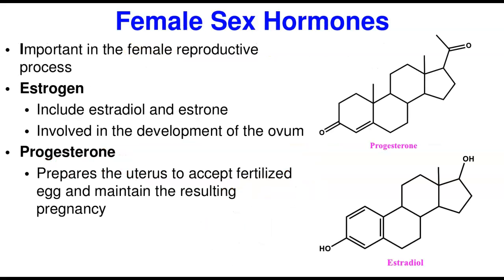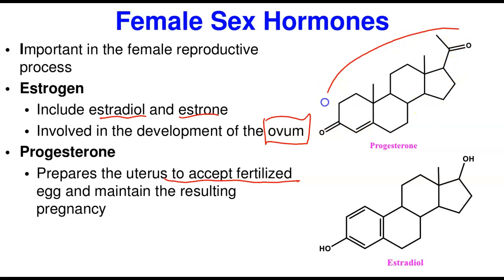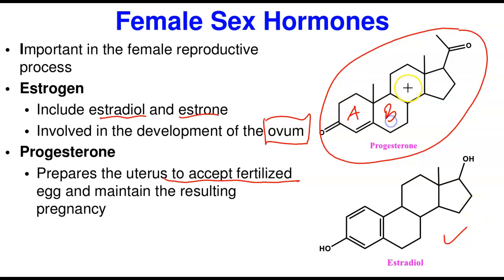The female sex hormones are important in reproductive processes — childbirth and getting pregnant. There are two main types: estrogen and progesterone. Estrogen includes estradiol and estrone and is involved in development of the ovum, getting the egg ready to be fertilized. Progesterone prepares the uterus to accept a fertilized egg and then maintains the resulting pregnancy until birth. These all share the basic steroid nucleus.